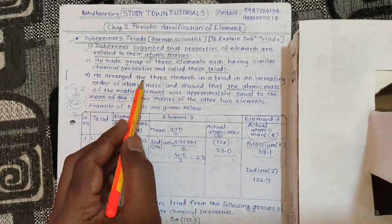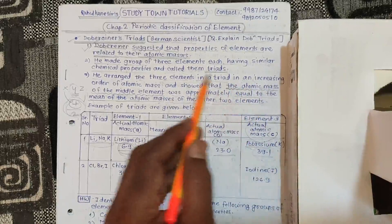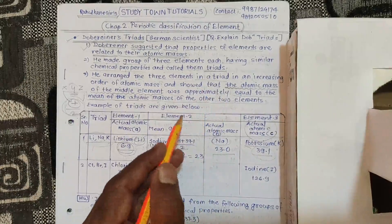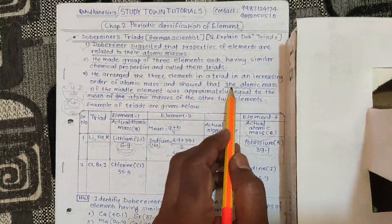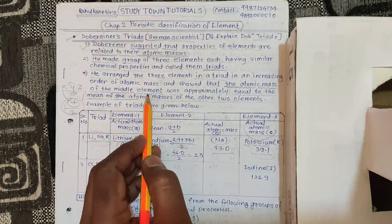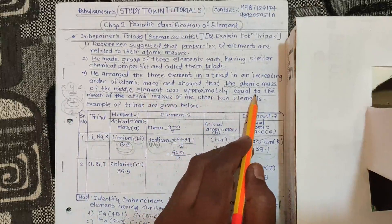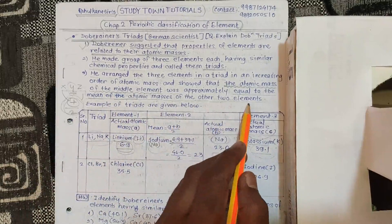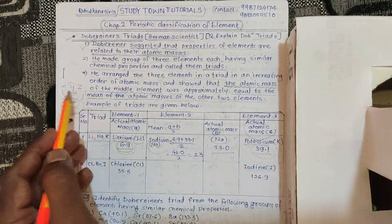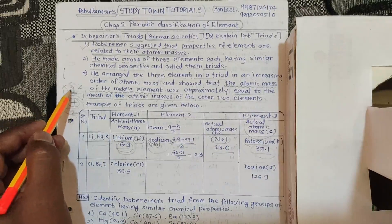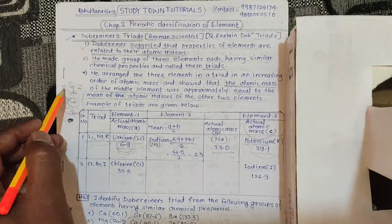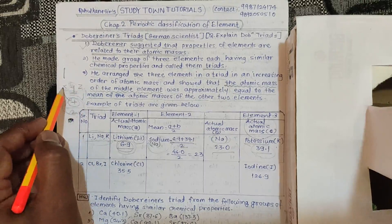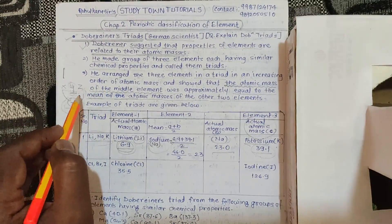In this triad, he arranged the three elements in increasing order of atomic mass, and showed that the atomic mass of the middle element was approximately equal to the mean of the atomic masses of the other two elements. So if x, y, z are in increasing order, then y ka atomic mass = (mass of x + mass of z) / 2.